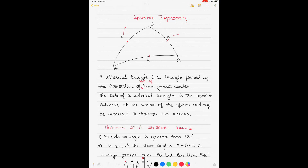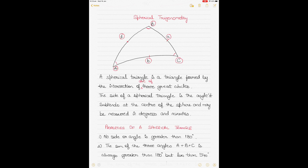In a spherical triangle, capital letters A, B, and C denote the internal angles, while small letters a, b, and c denote the sides. Side a is opposite angle A, side b is opposite angle B, and side c is opposite angle C. Be careful to distinguish small c from capital C in your calculations, since one denotes a side and the other denotes an angle — many navigation books use this notation.